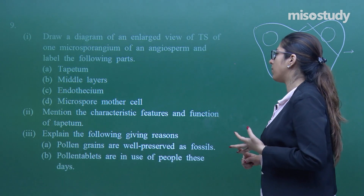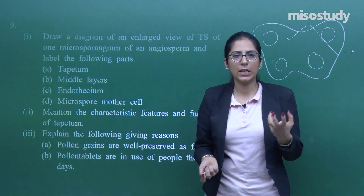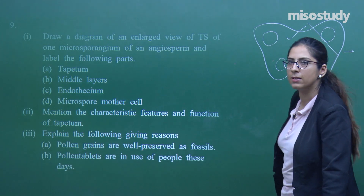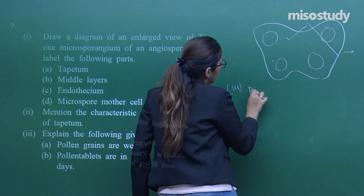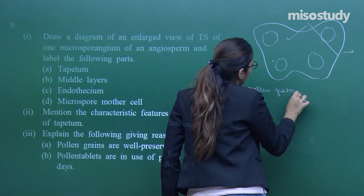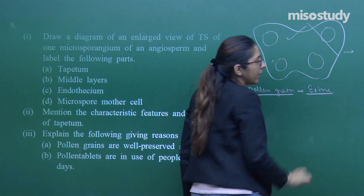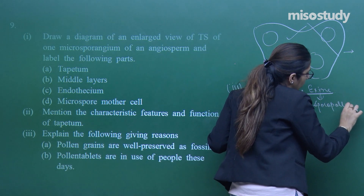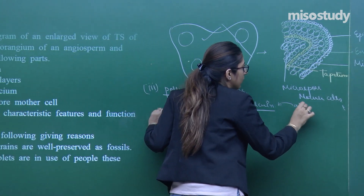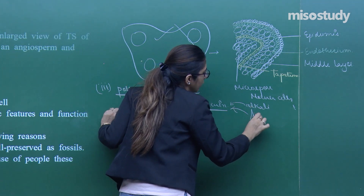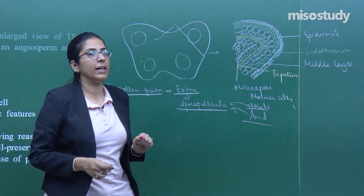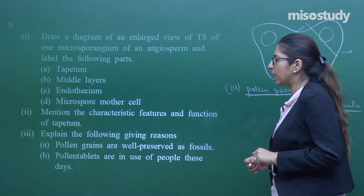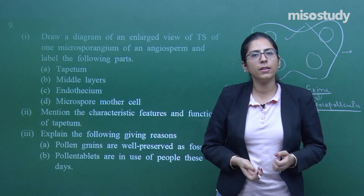The second part asks: 'Mention the characteristic feature and function of the tapetum.' The main function of the tapetum is to provide nourishment to developing pollen grains. The third part: 'Explain why pollen grains are well preserved as fossils.' The outermost covering of pollen grains is the exine, which is made up of sporopollenin — a highly resistant substance unaffected by any acid or alkali — which allows pollen to be easily preserved as fossils.